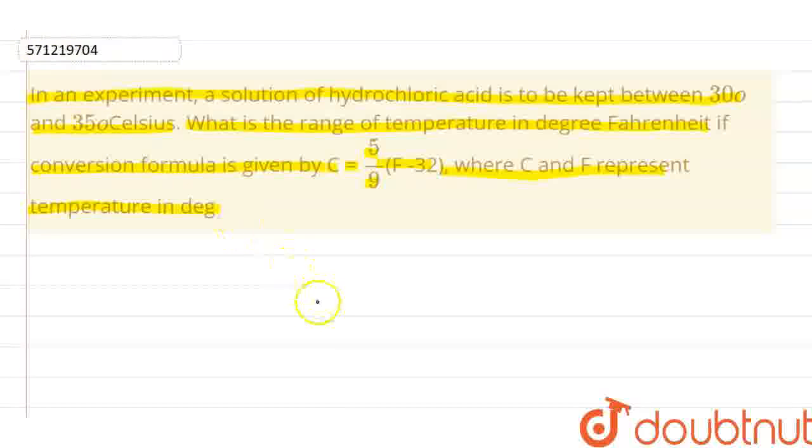So let us start with the question. In this question, we are given that C, that is the temperature in Celsius, belongs between the range 30 degree to 35 degree. And we are given the formula for conversion, which is C equals 5 by 9 into F minus 32.